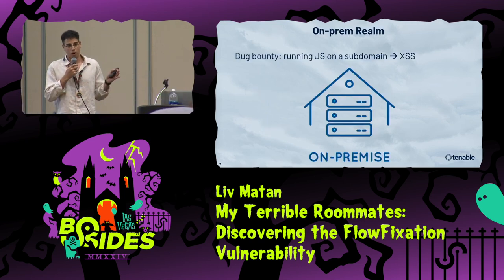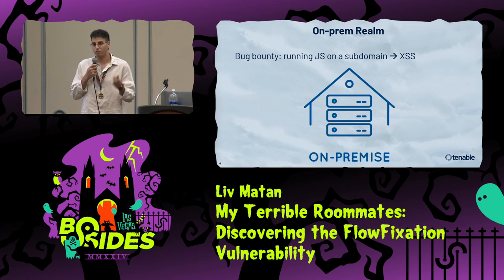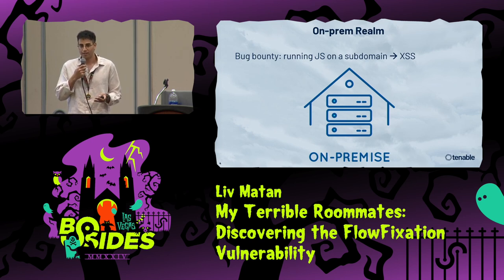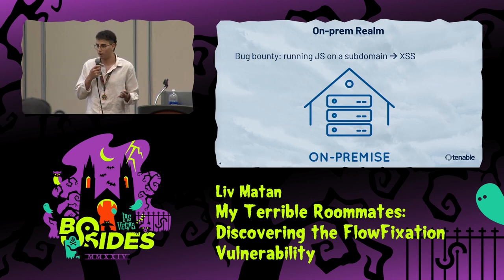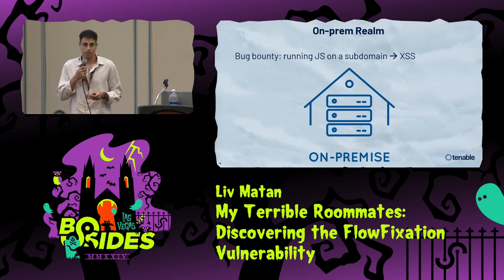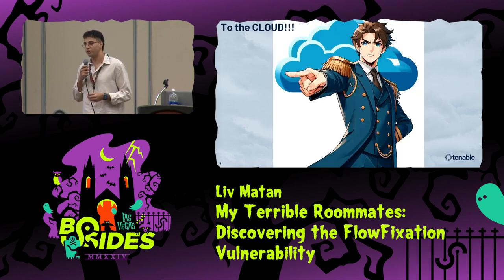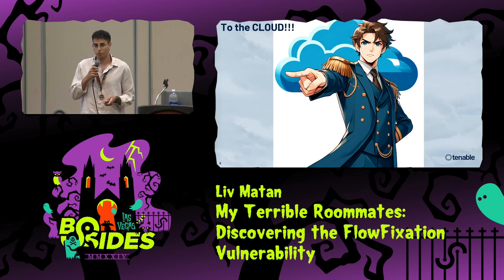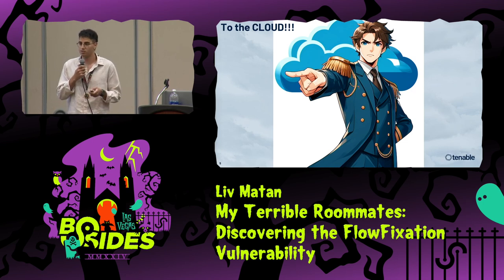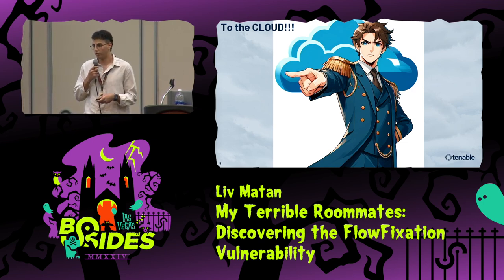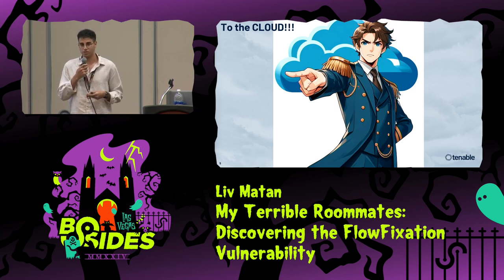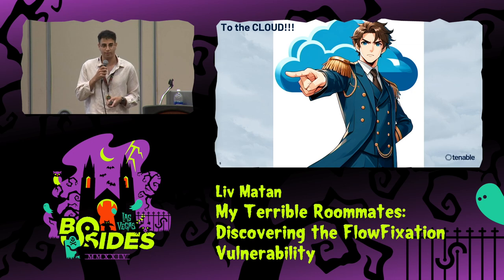In the on-prem world and bug bounty, when you run JavaScript on a subdomain, this is a vulnerability. When you report it in a bug bounty, you get XSS, you get paid — this is a valid vulnerability. But in the cloud, this concept is observed differently, because there are a lot of services that host web services on the same parent domain, and different customers share different subdomains.